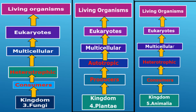Comparing kingdom Fungi, kingdom Plantae, and kingdom Animalia: all three are multicellular eukaryotic living organisms. The difference is in their nutrition — kingdom Fungi is a consumer (heterotrophic), kingdom Plantae is a producer (autotrophic), and kingdom Animalia is a consumer (heterotrophic). Producers prepare their own food, while consumers depend on other living organisms for food.